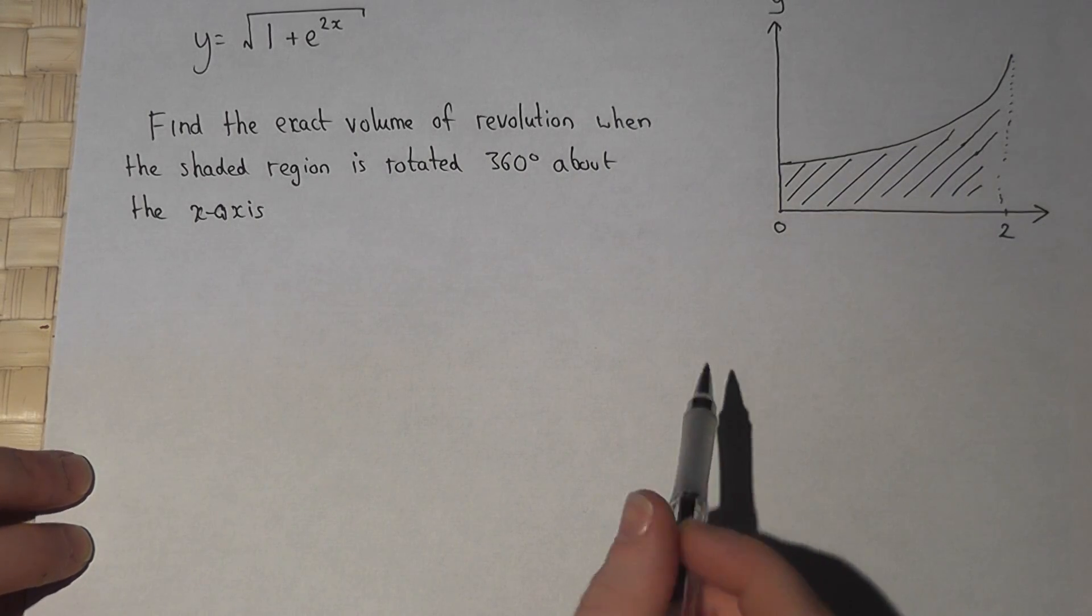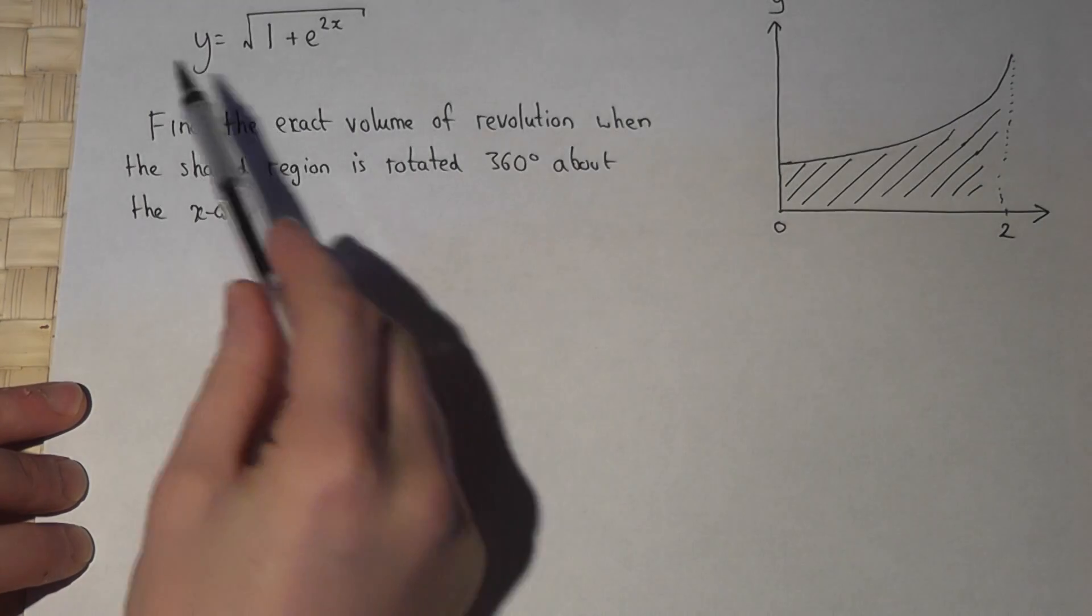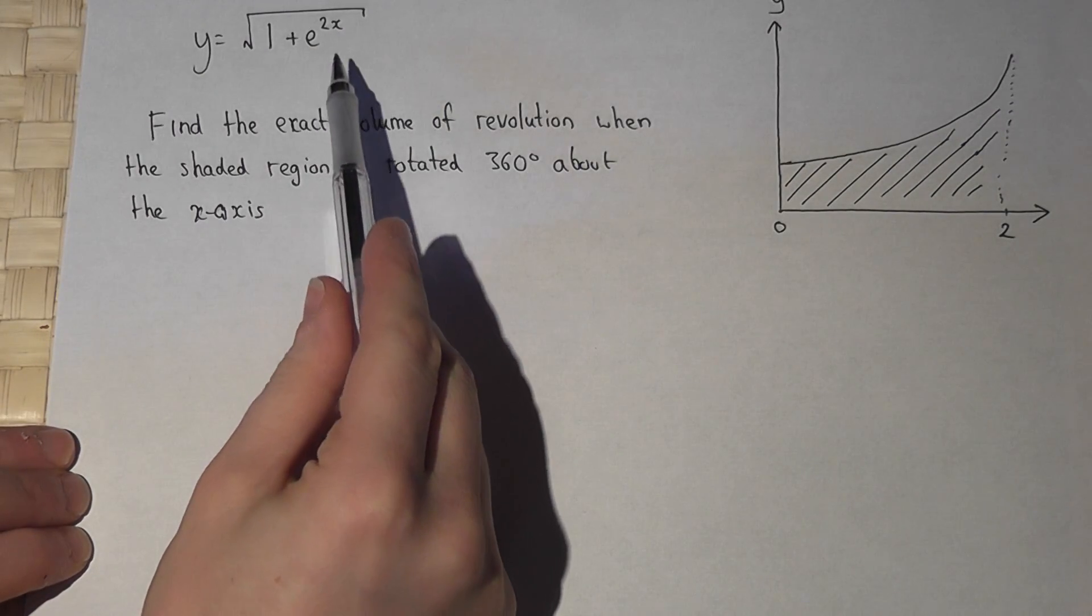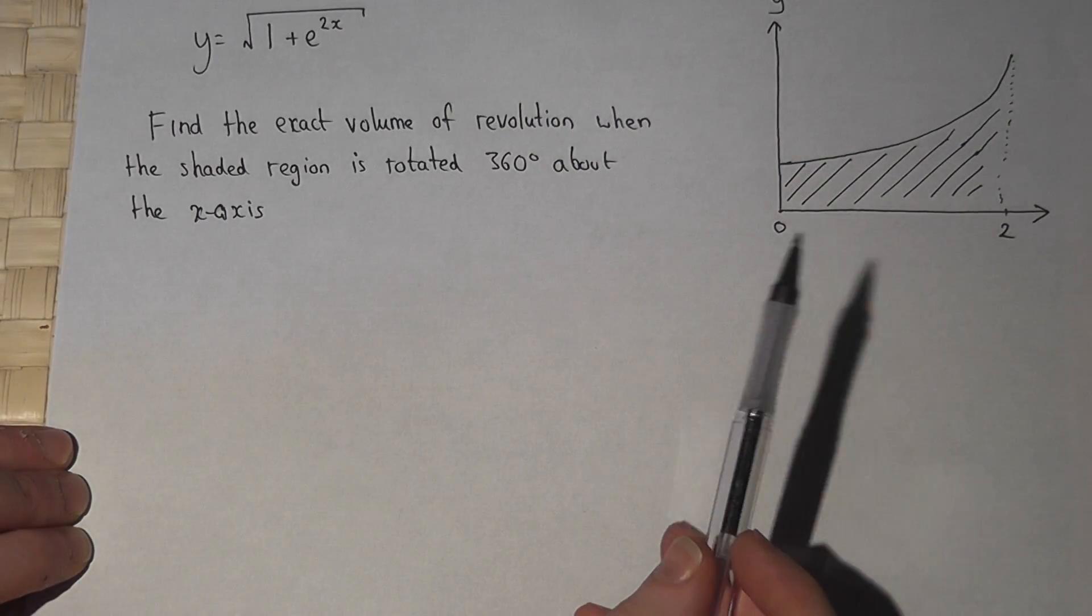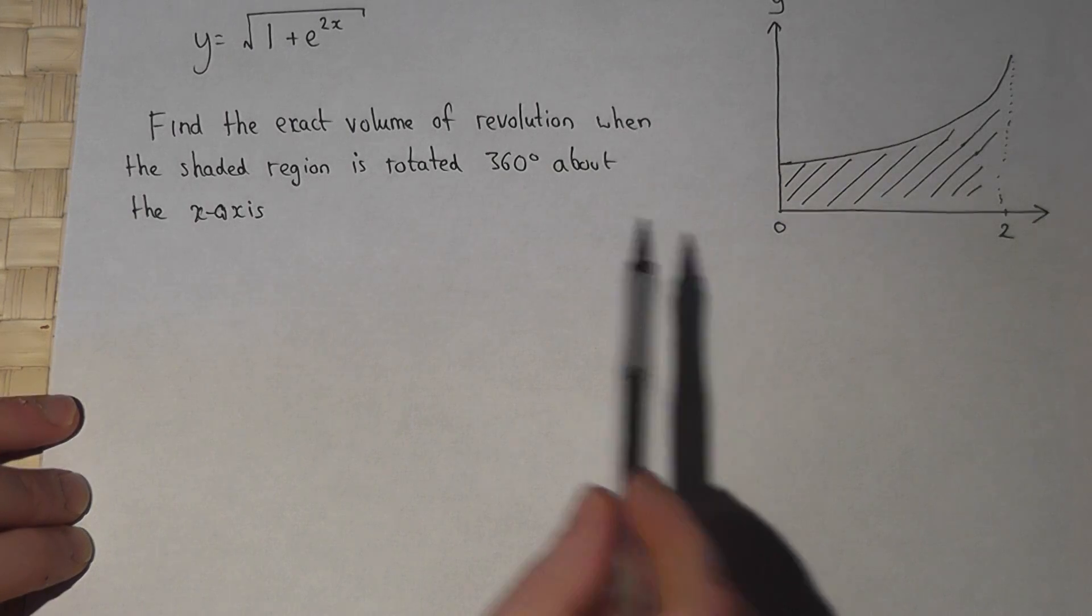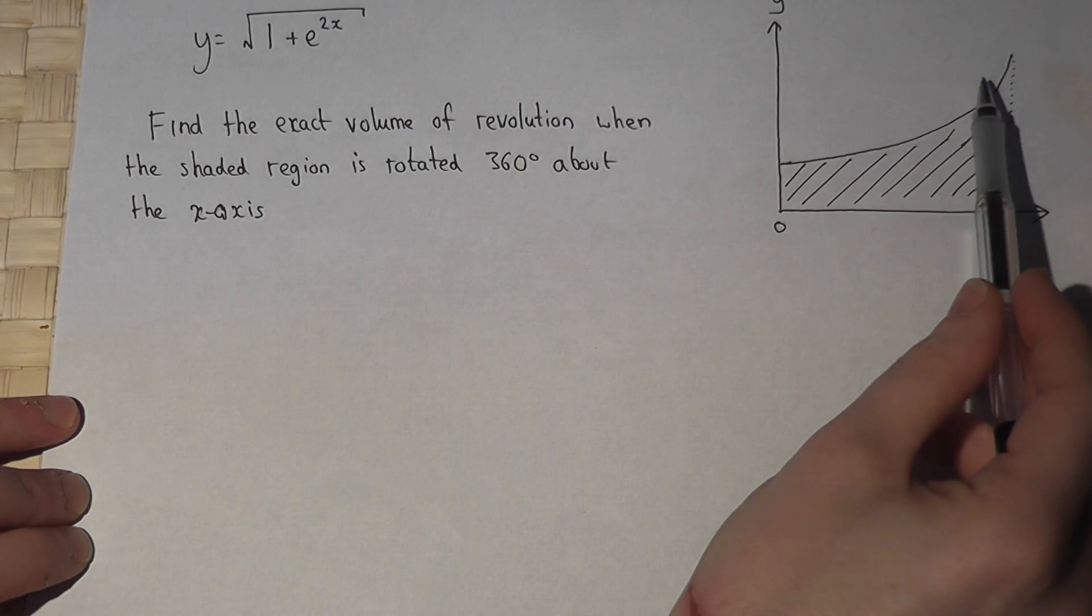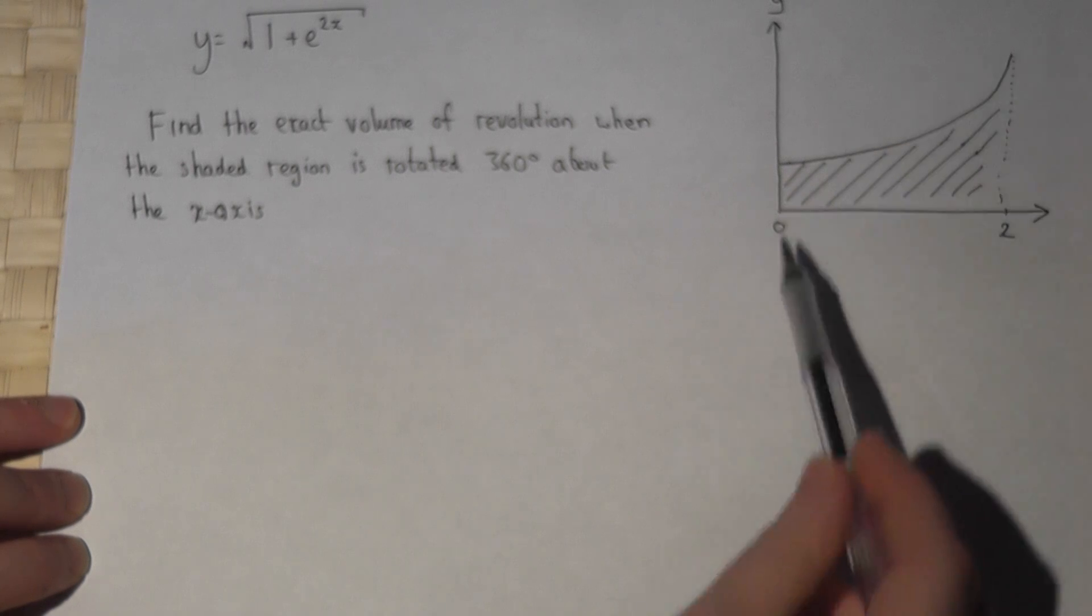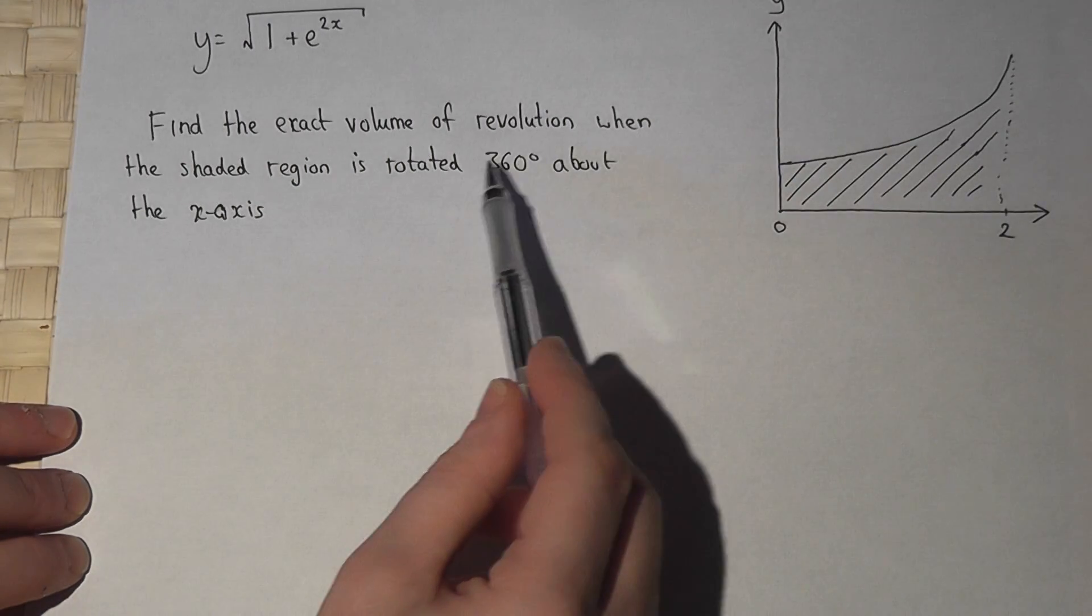In this question we're given a function which is y equals the square root of 1 plus e to the power of 2x, and the question is what is the volume if this is rotated around the x-axis by 360 degrees.